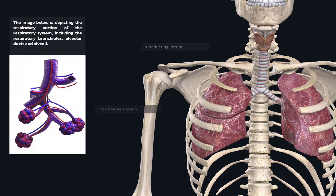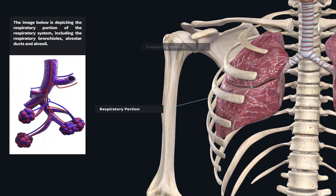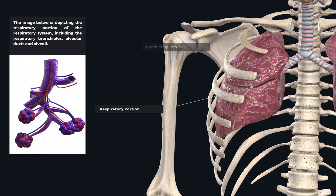The final branches of the conducting portion are called terminal bronchioles, which brings us into the respiratory portion of the respiratory system. These are all such small structures that an image is needed to depict their layout. The main function of the respiratory portion is the actual exchange of gas between the respiratory system and the circulatory system — visible here as arteries and veins. The respiratory portion includes large tubes called respiratory bronchioles.